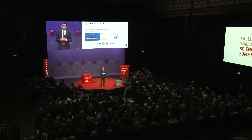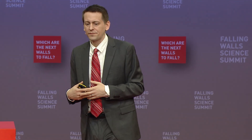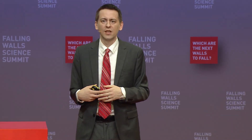We've made everything freely available — not just the code, but also predictions for the human proteome. We started with 21 model organisms such as E. coli and yeast, and now have over 200 million predictions of protein structures across life, representing roughly all predictions for all proteins whose genome has been sequenced.